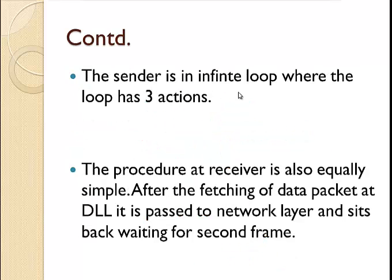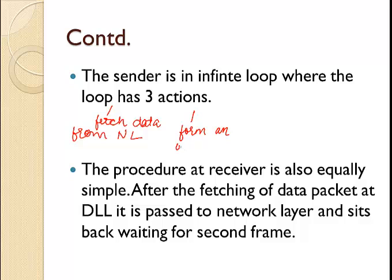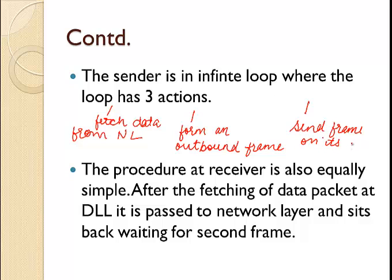The sender is an infinite loop where the loop has three actions: first, fetch data from the network layer; second, form an outbound frame; and third, send the frame on its way. The procedure at the receiver is equally simple — after fetching data at the data link layer, it is passed to the network layer and the receiver waits for the next frame.